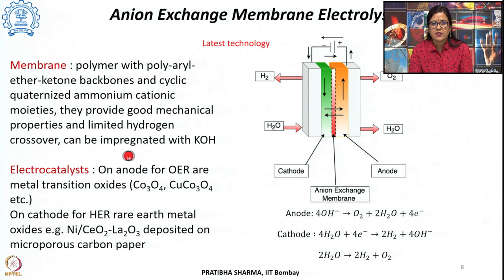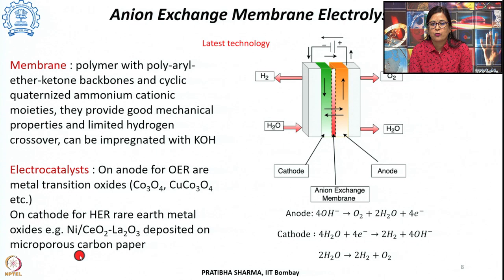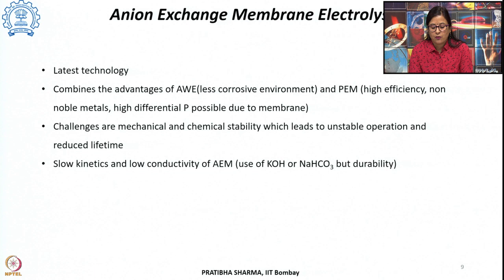The electrocatalysts for AEM electrolysis include transition metal oxides like Co₃O₄ and Cu·Co₃O₄ on the anode side for the oxygen evolution reaction. On the cathode side for the hydrogen evolution reaction, rare earth metals and their oxides can be used — such as nickel, cerium oxide, and lanthanum oxide — deposited on microporous carbon paper.